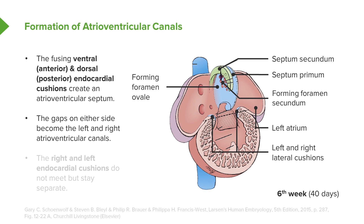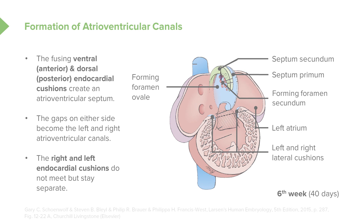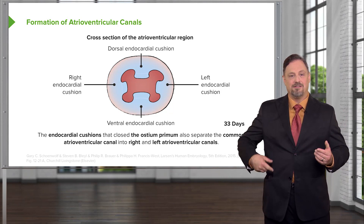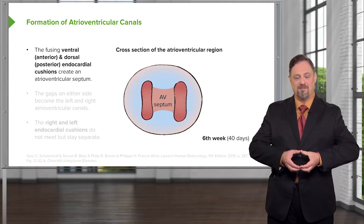However, if it closed the atrioventricular canals completely, we'd break our cardinal rule — we'd stop the flow of blood through the heart, because blood could not leave the atria and travel to the ventricles. So instead, a single large open atrioventricular canal becomes two atrioventricular canals. Using a simplified schematic with the dorsal endocardial cushion on top, ventral on the lower part, and right and left endocardial cushions on either side, the easiest way to conceptualize this is to make a circle with your fingers and then pinch it together to create two separate holes.